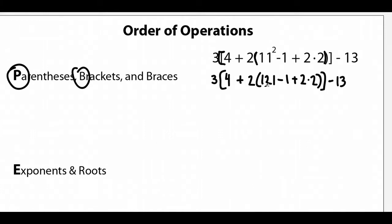So now that we've done our exponents, we look for multiplication and division, which we have right here. So 2 times 2 is 4. Drop it all down. Almost there.